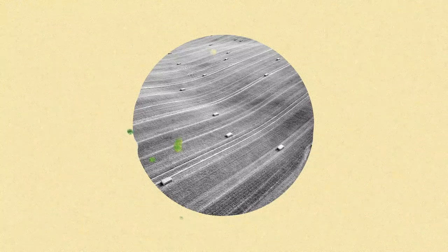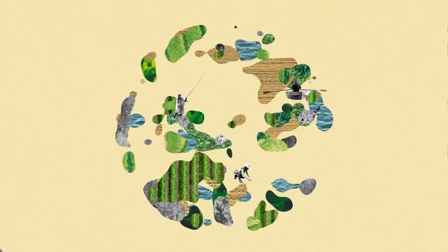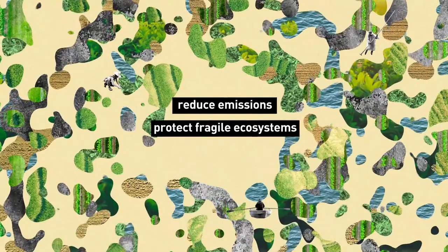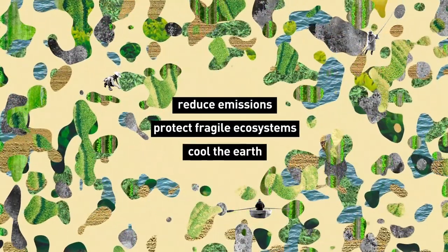Social movements across the world fight to reclaim a food system based on food sovereignty, small-scale farming and peasant agro-ecology. Such a food system can significantly reduce emissions, protect fragile ecosystems and biodiversity and even cool the earth.